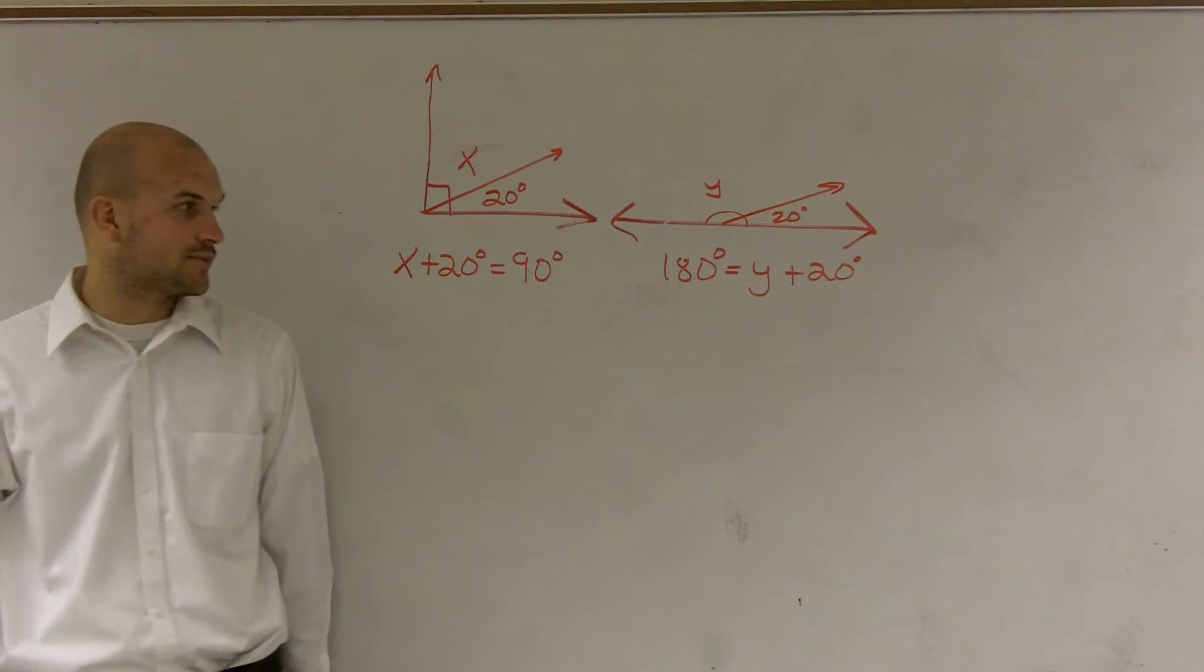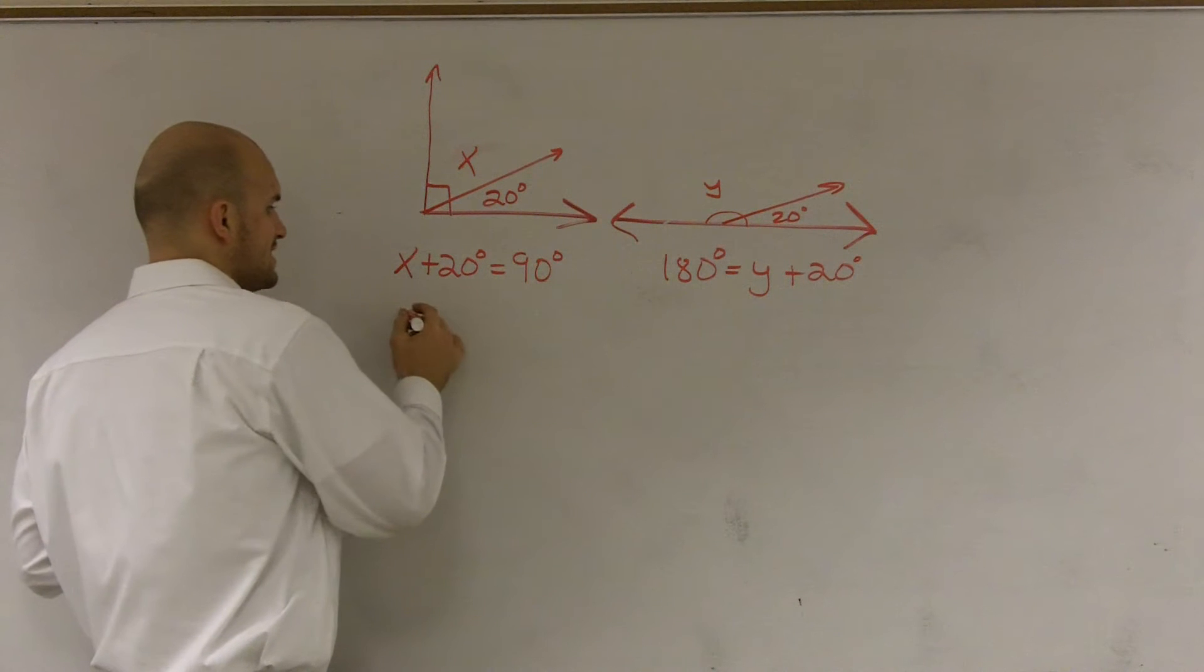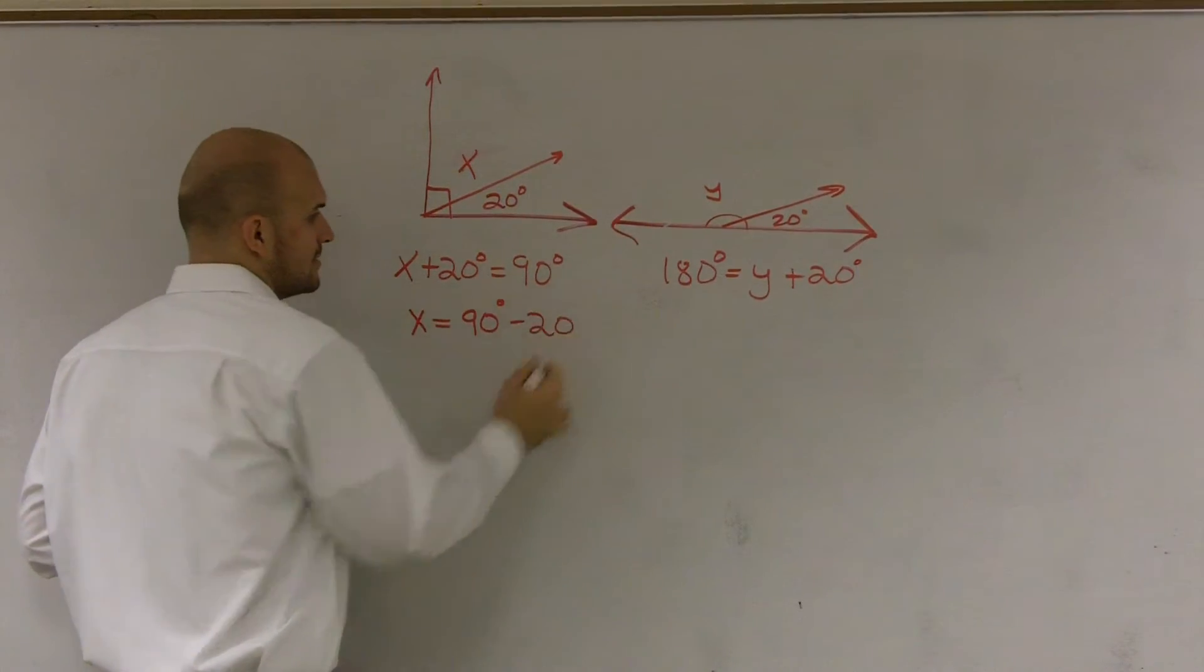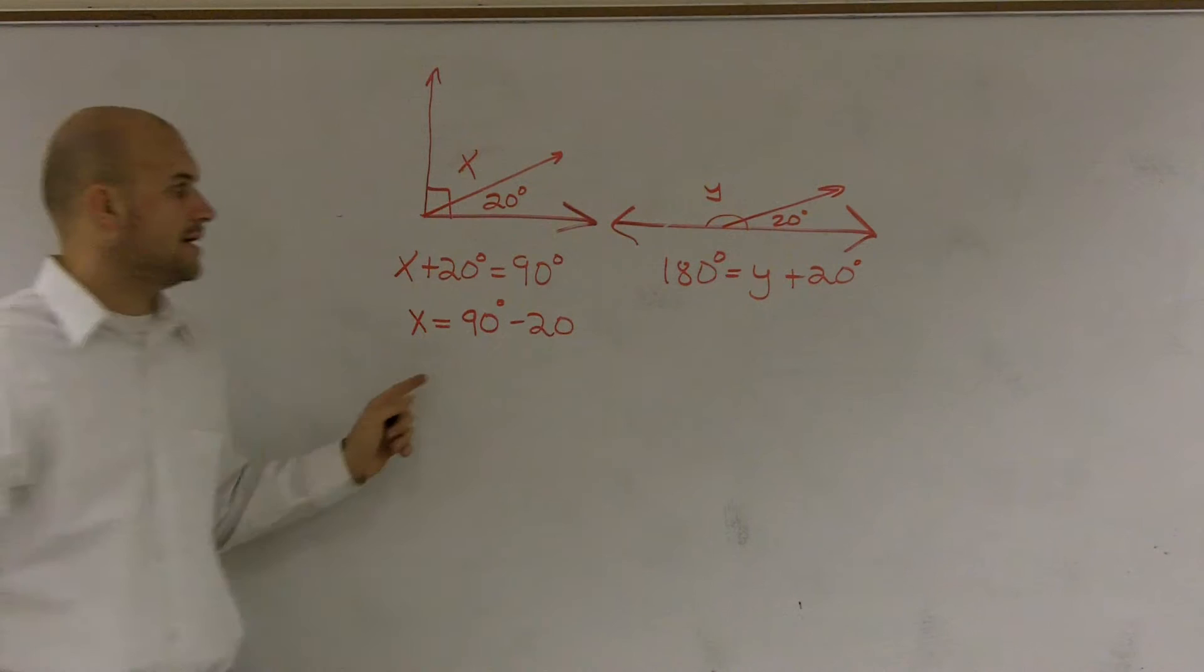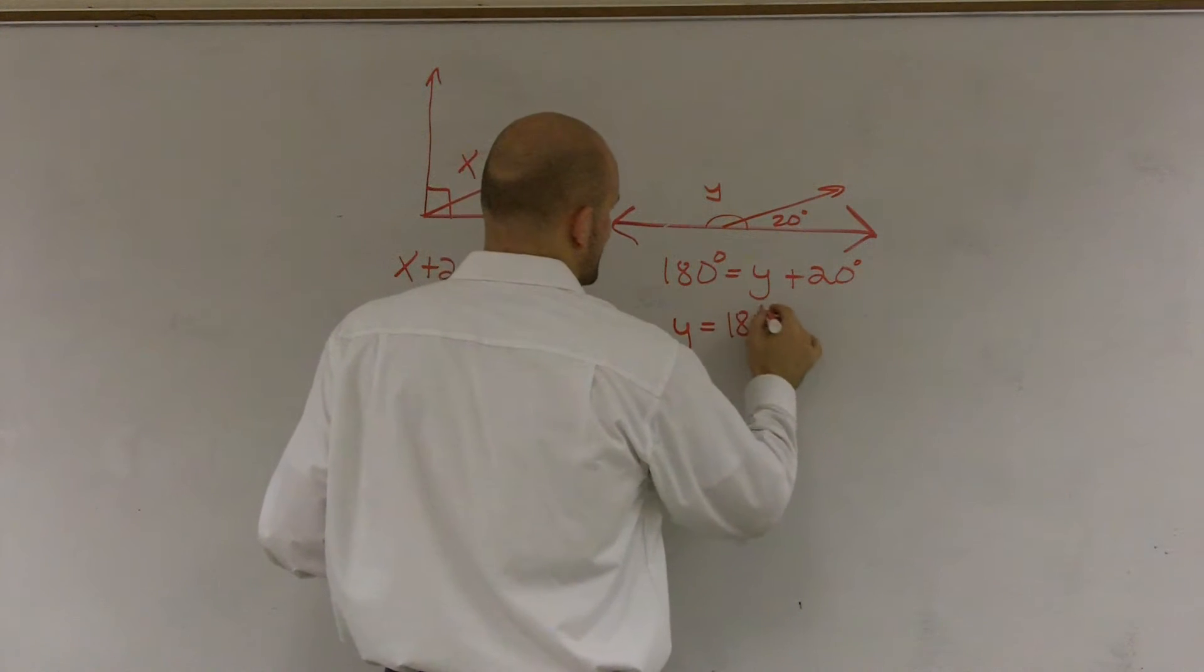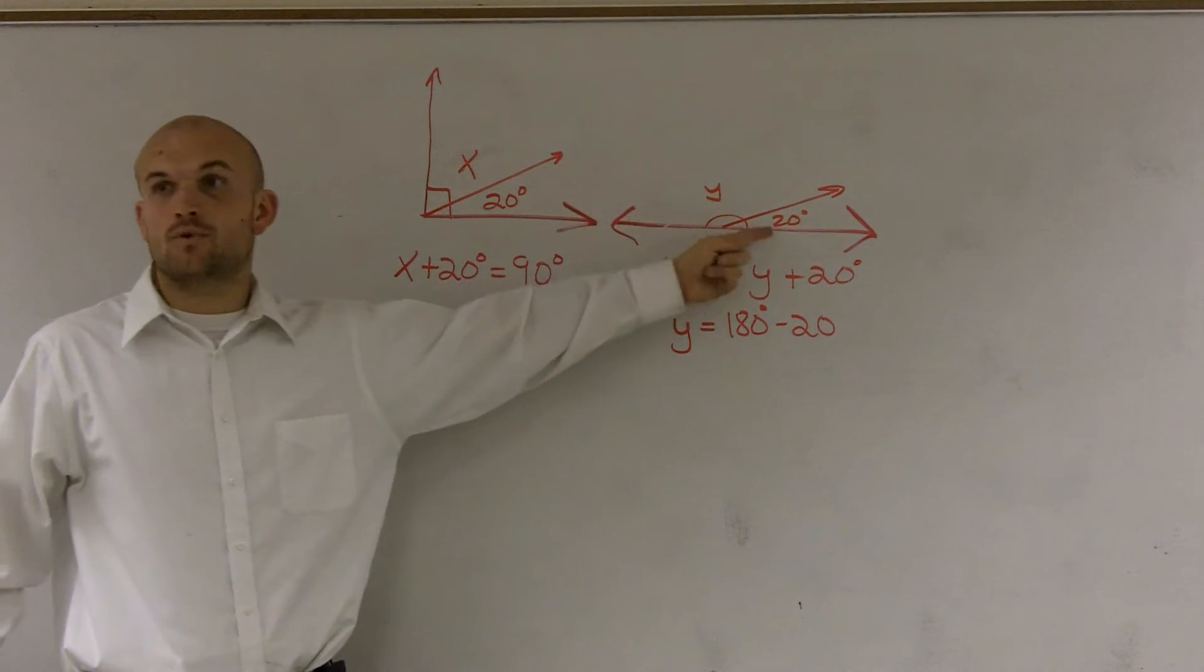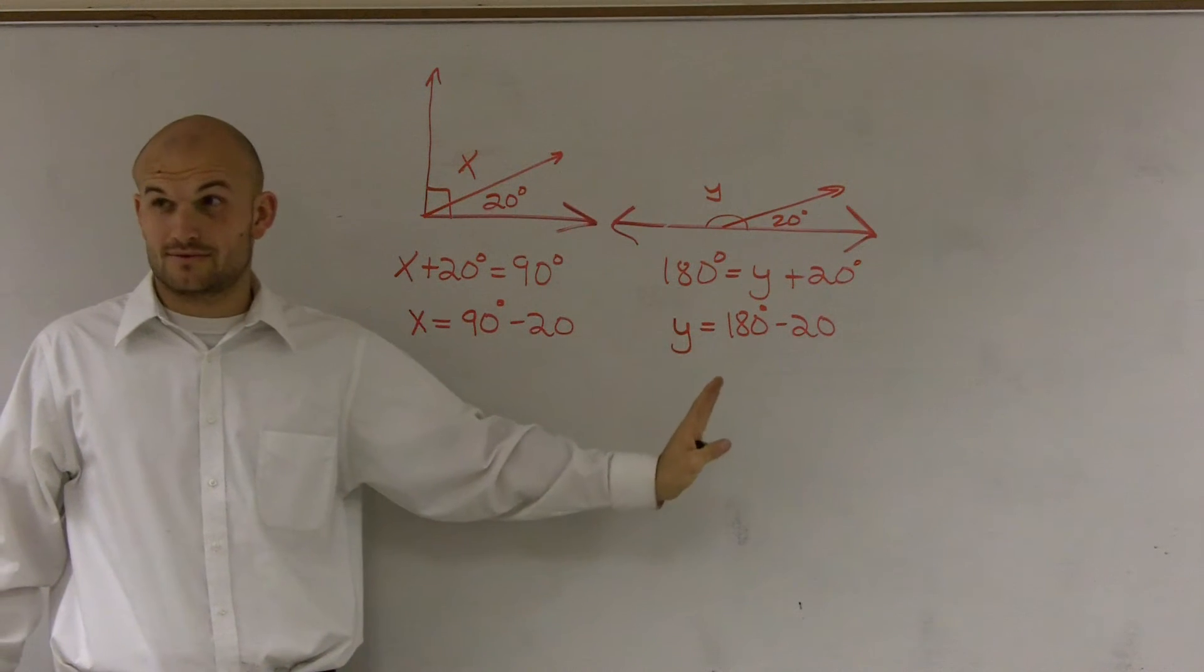So now to solve each one of those, a general equation for all complementary angles, what you could say is x equals 90 degrees minus 20. It doesn't matter what this angle is, you're always going to subtract it from 20 to get your answer. And this one's the same thing, I can write y equals 180 degrees minus 20. So whenever you're dealing with a straight angle, if I give you one angle, you always subtract it from 180 to get y.